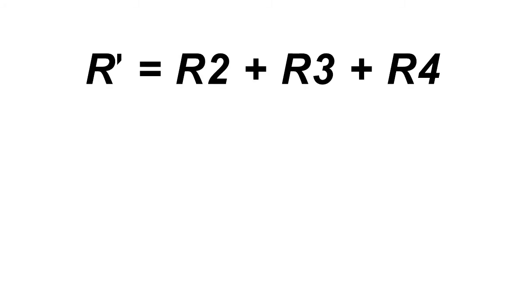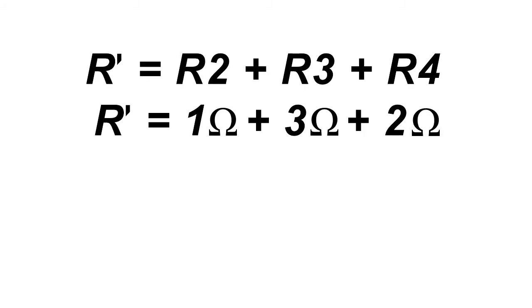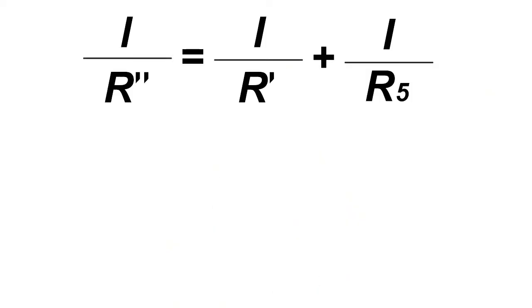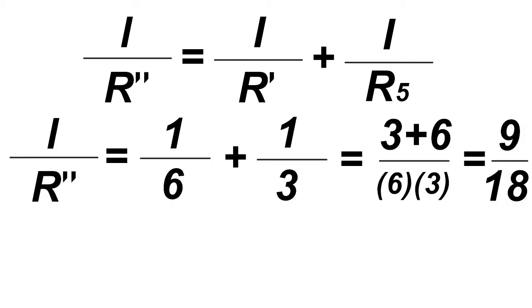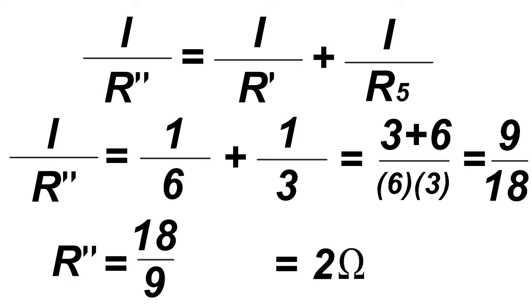To get R', we use the series formula: R2 plus R3 plus R4 equals 1 ohm plus 3 ohms plus 2 ohms, so R' equals 6 ohms. Now, add R' and R5 using the parallel equation: 1 over R2' equals 1 over R' plus 1 over R5. So, 1 over 6 plus 1 over 3 equals 9 over 18. The value of R2' equals 2 ohms.